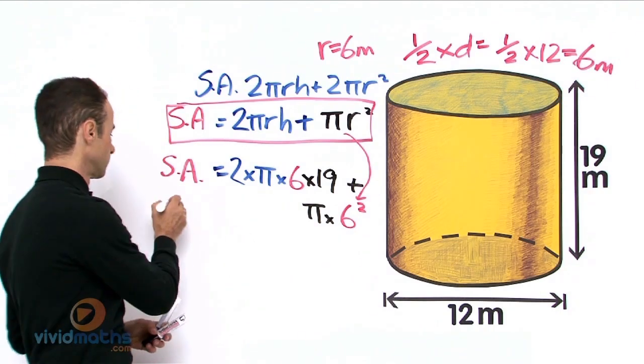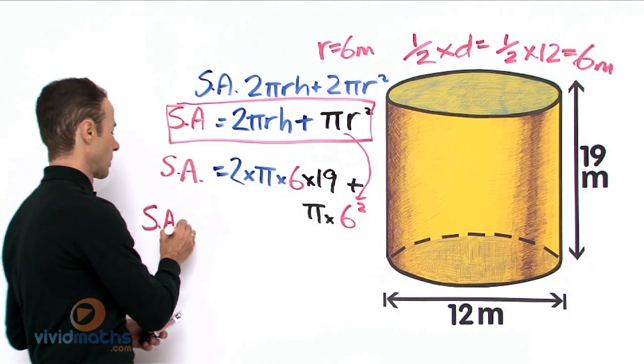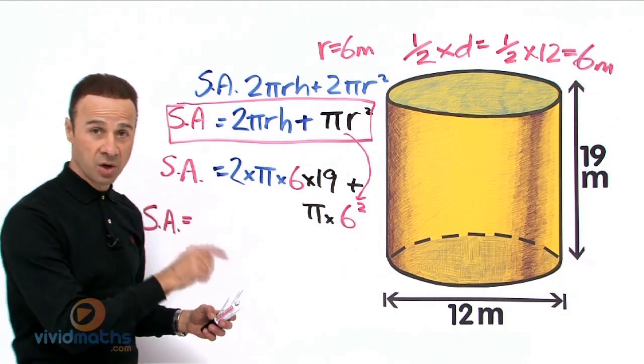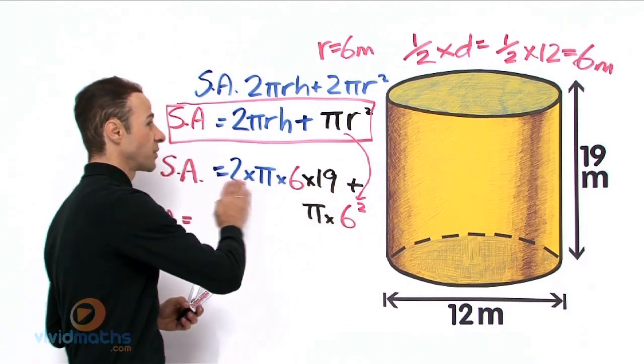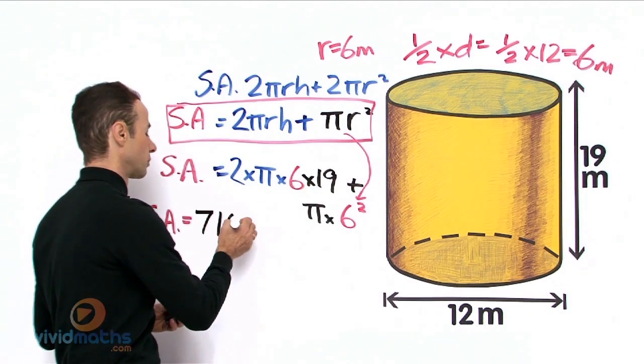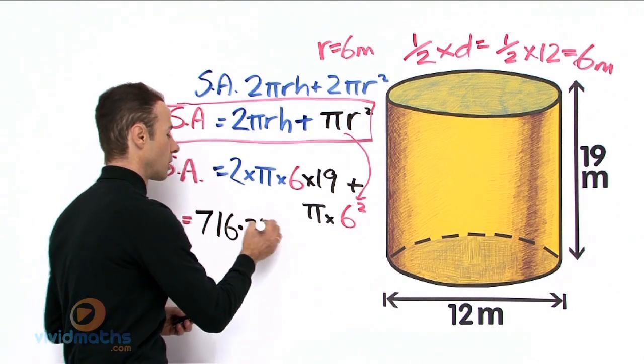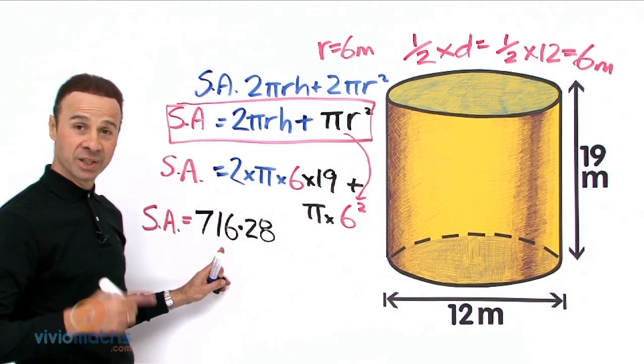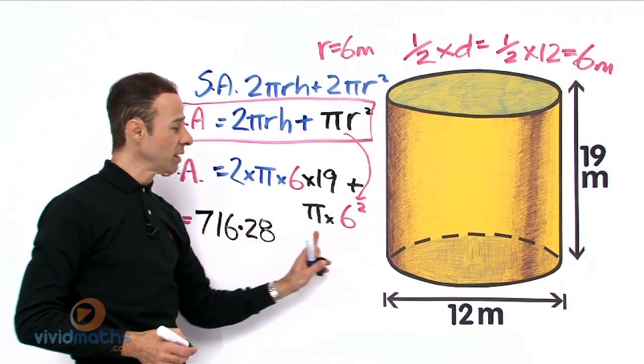2 times π times 6 times 19 equals, just this front part along here, that's to two decimal places, 716.28 meters squared. Now we are going to add this πr² here, this second part here.